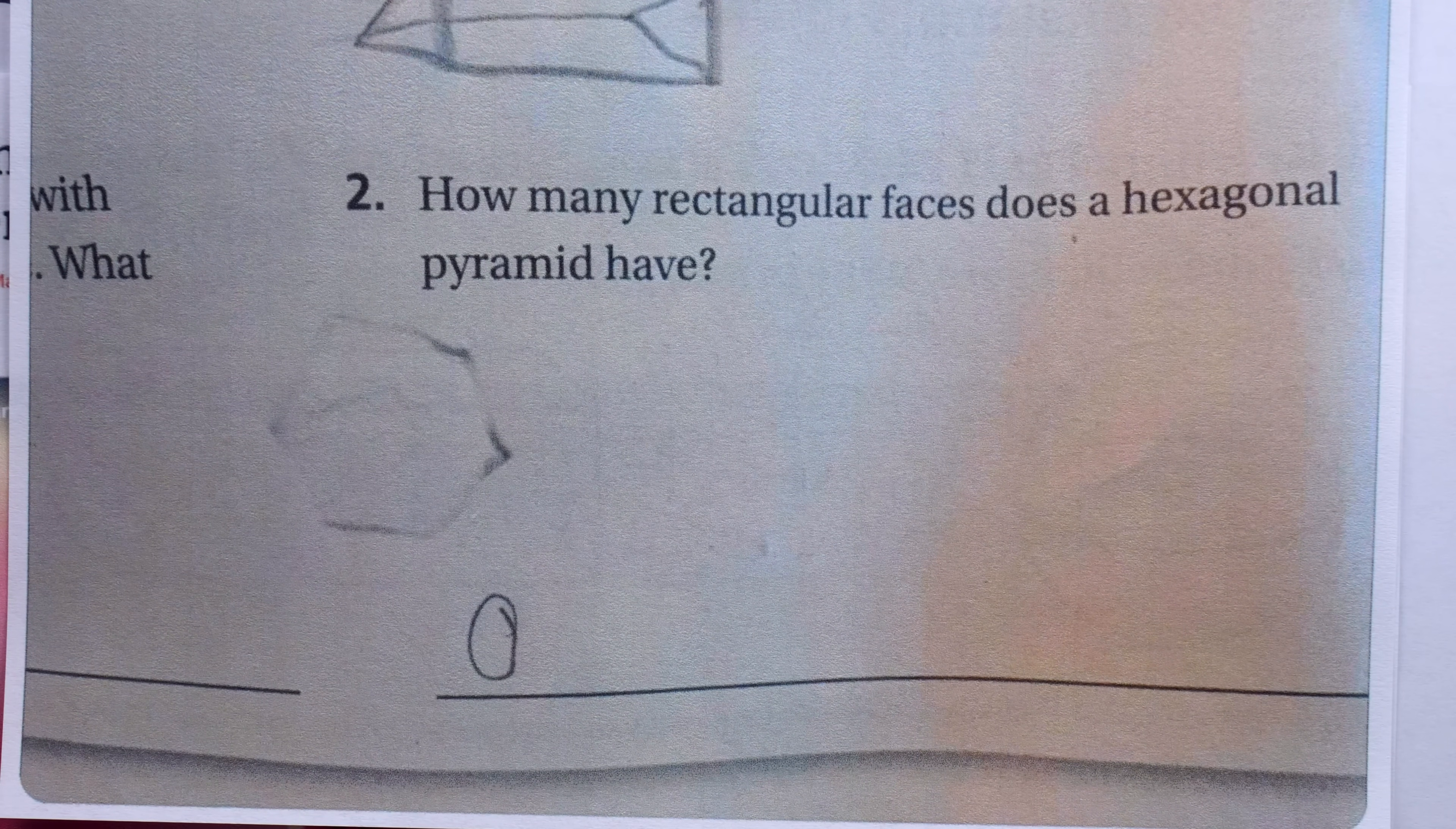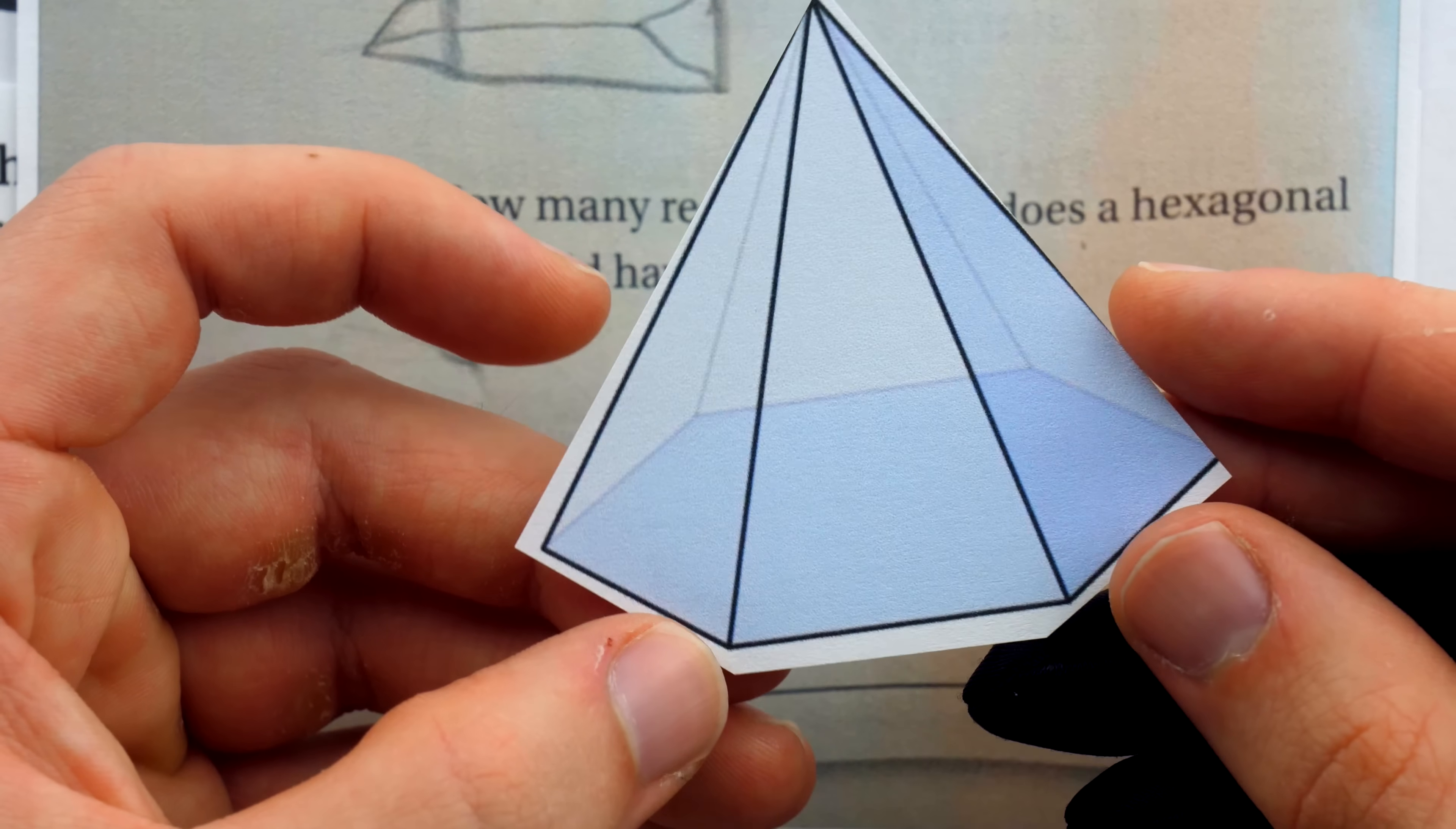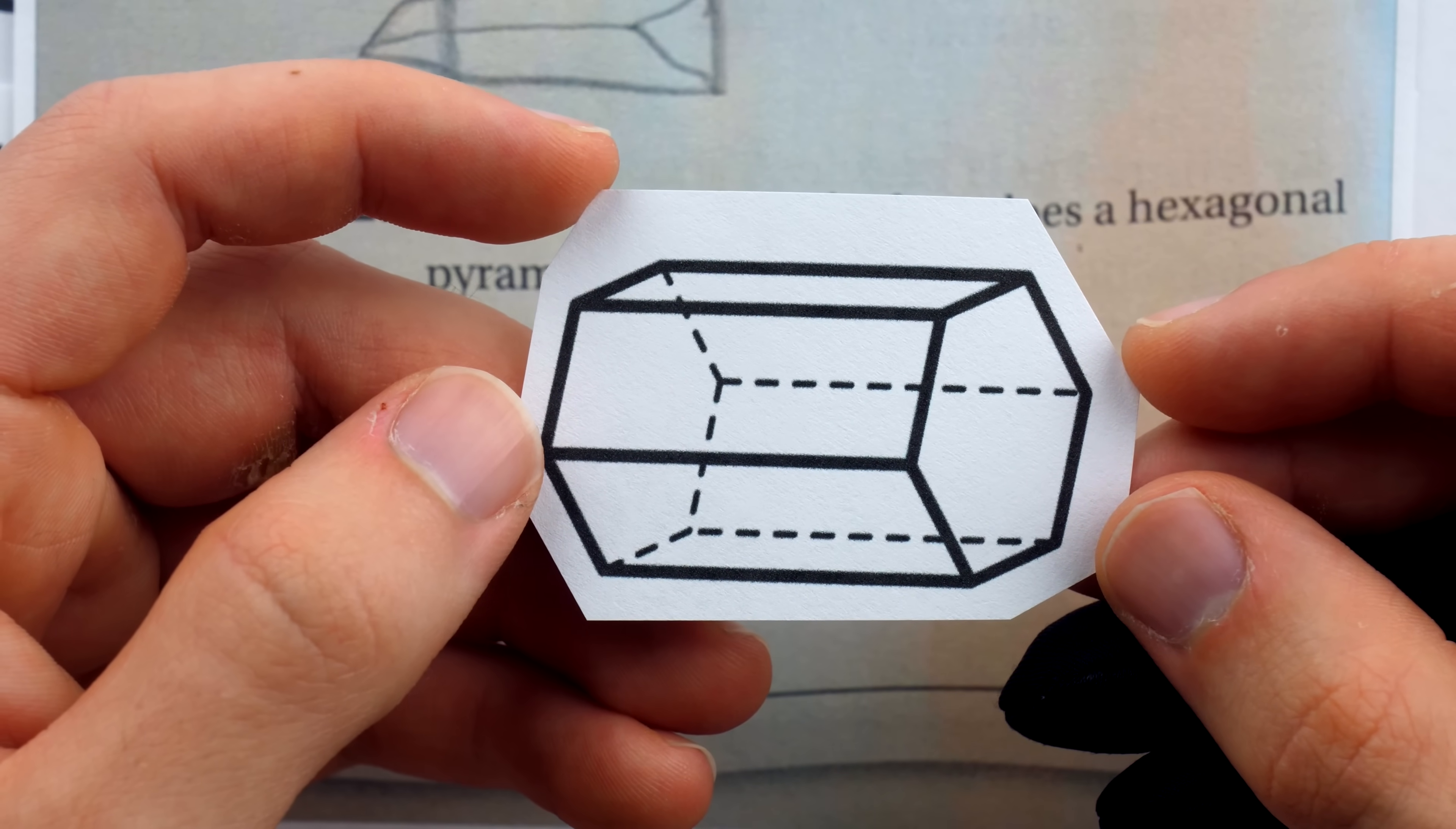It was a crying shame too, because it seemed like it would have been so easy to say that the question was supposed to say triangular faces, since we see there are six triangular faces in a hexagonal pyramid, or that maybe the question was supposed to say hexagonal prism. We can see there are six rectangular faces in a hexagonal prism.